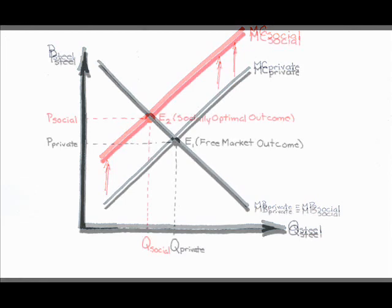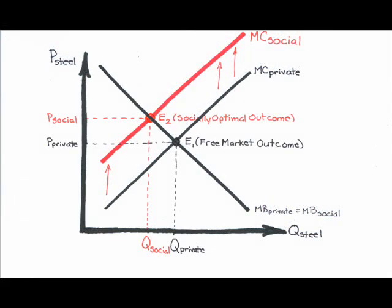Left to its own devices, the steel market will be based on private costs and private benefits yielding the price and quantity associated with equilibrium E1. What would society rather see? The socially optimal outcome would be based on social costs and social benefits, or equilibrium E2.